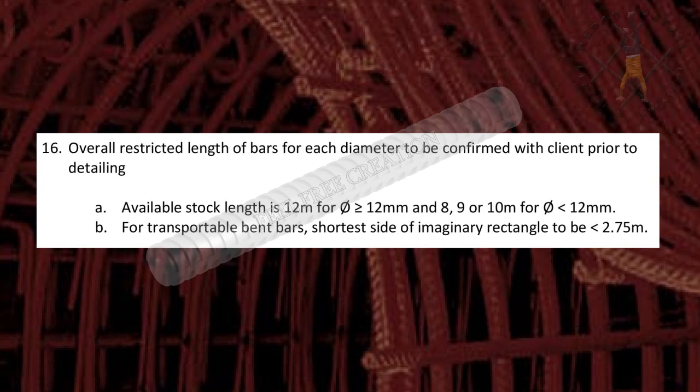Point 16. Overall restricted length of bars for each diameter to be confirmed with client prior to detailing. Suitable stock length is 12 m for dia greater than or equal to 12 mm, and 8, 9, or 10 m for dia less than 12 mm. For transportable bent bars, the shortest side of the imaginary rectangle to be less than 2.75 m.